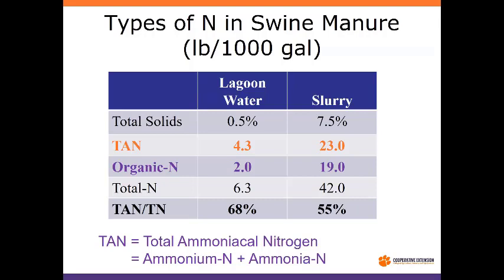I'm going to focus on two examples: lagoon water from South Carolina at half percent total solids, where a lot of biological and physical treatment has happened. We've got predominantly total ammoniacal nitrogen — we call it TAN — that's the ammonium ion plus the ammonia piece together. We've got two pounds per thousand gallons of organic N in this sample, about 68% TAN. Then I switch over to a slurry at seven and a half percent solids, looking at 23 pounds per thousand gallons TAN and 19 pounds per thousand gallons organic N. I didn't measure nitrate because both situations are in anaerobic conditions.